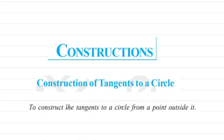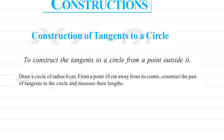Today we will see the construction of tangents to a circle. First we will see the construction of tangents to a circle from a point outside it. We have to draw a circle of radius 6 centimeters, then from a point 10 centimeters away from its center, construct a pair of tangents to the circle and measure the length of the tangents as well.